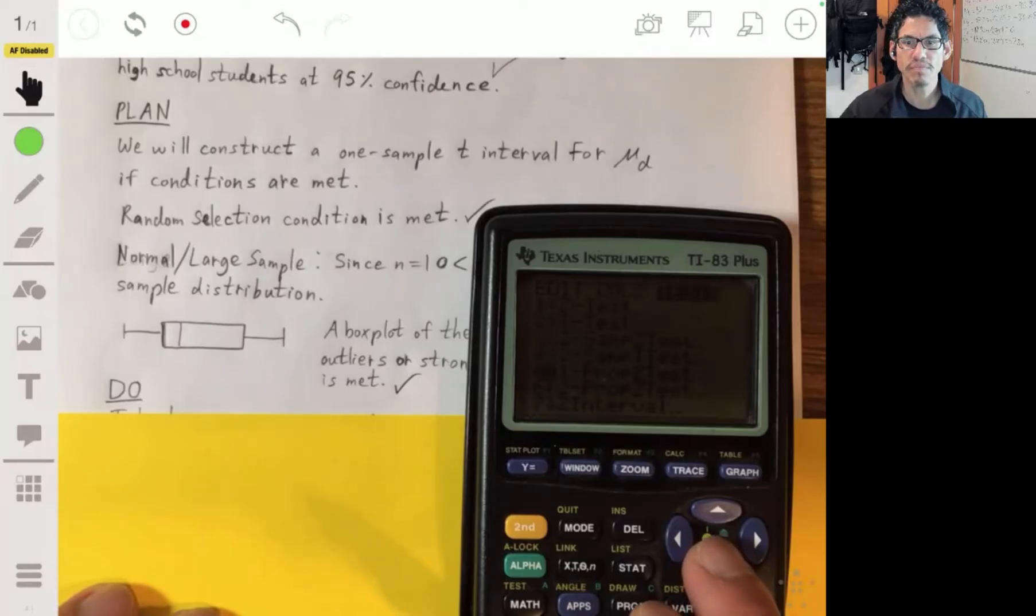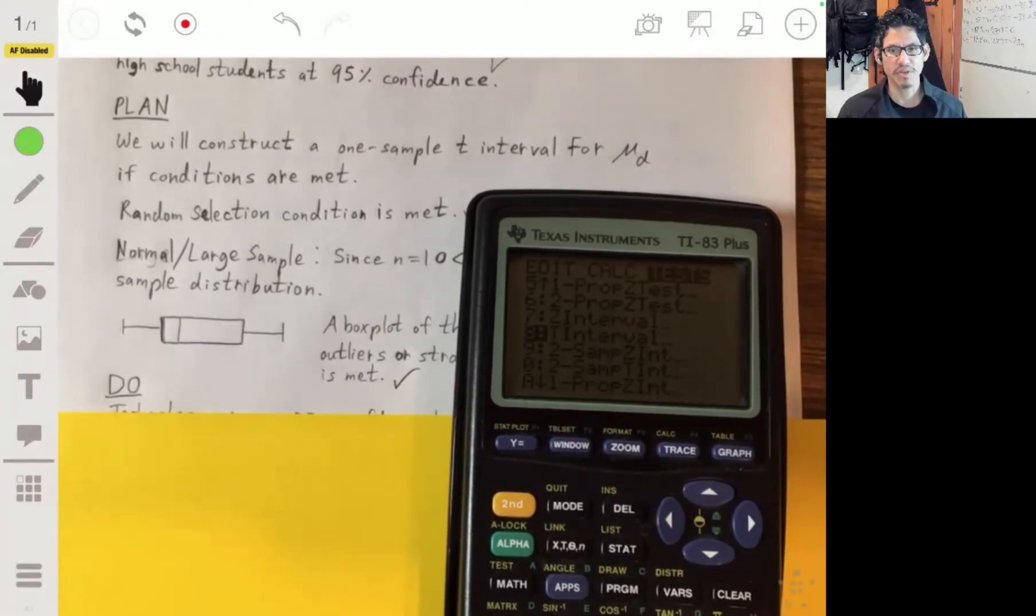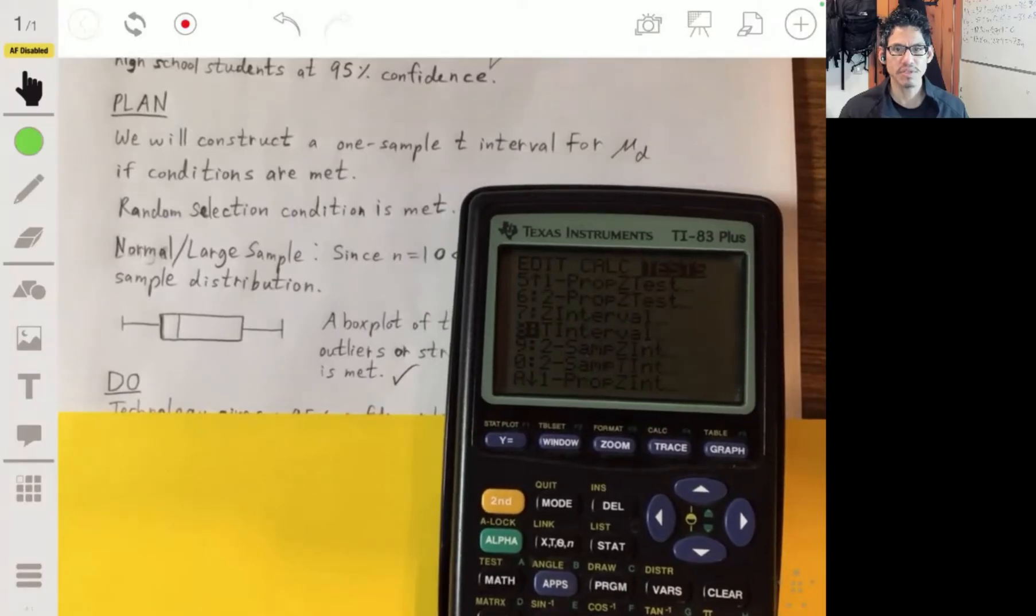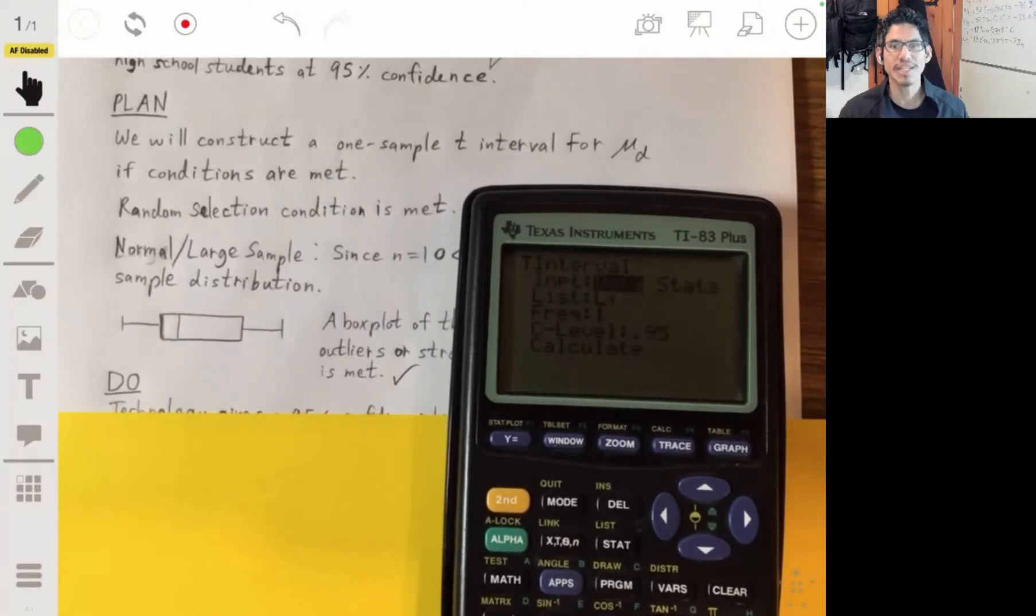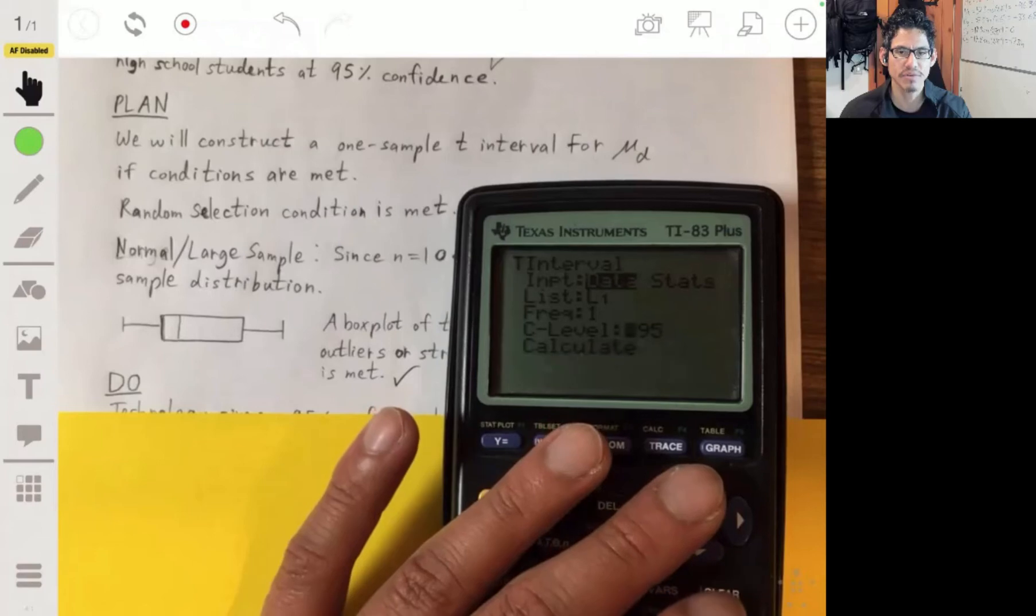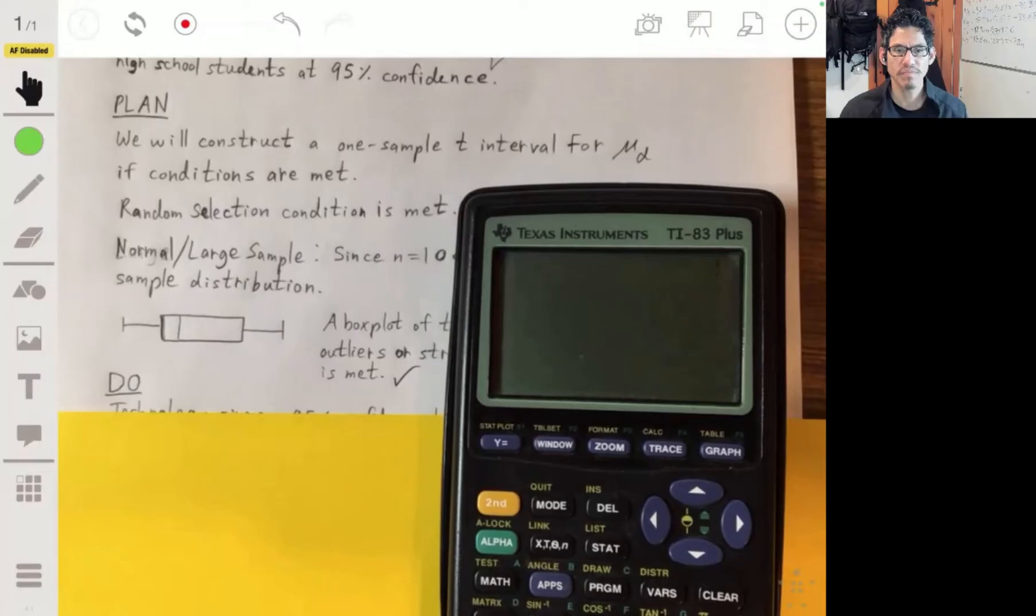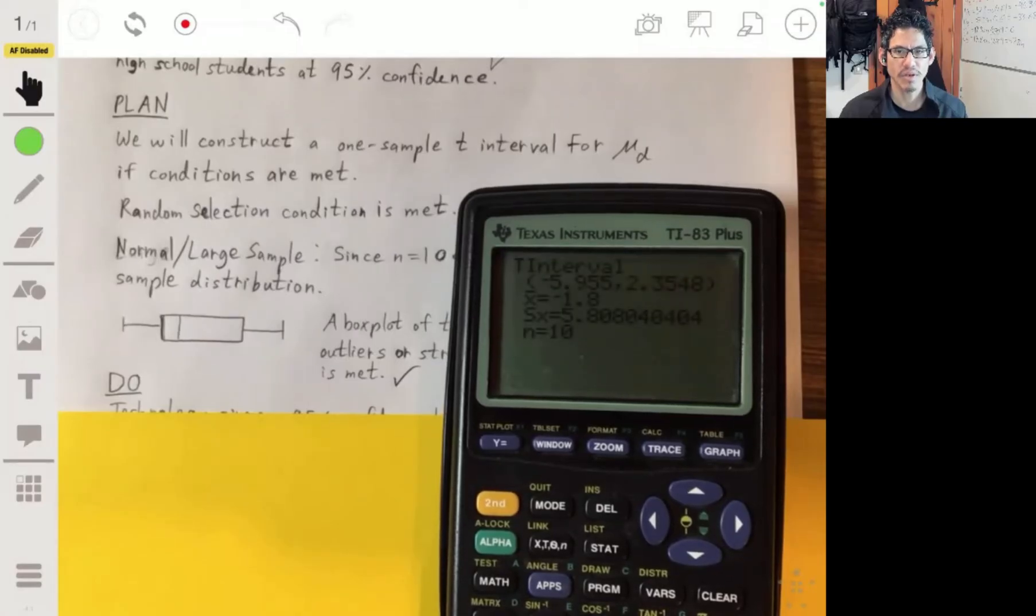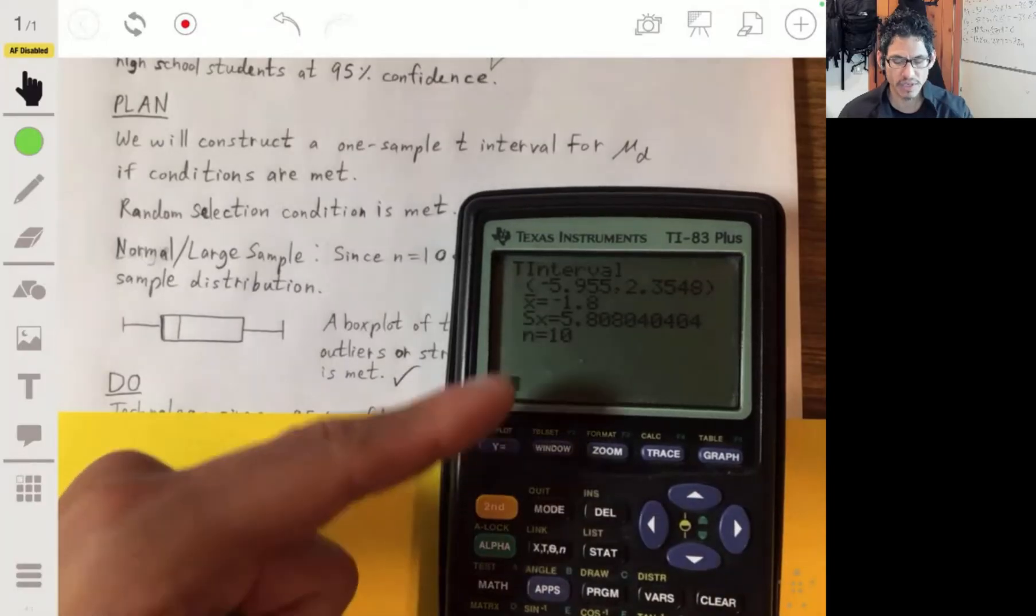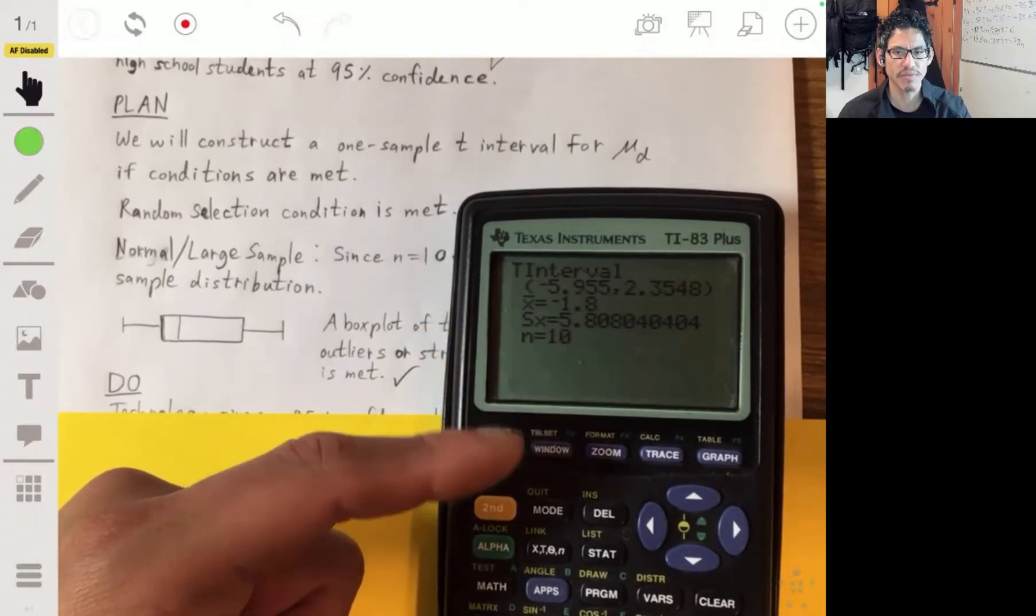Your calculator, maybe you have a newer version, so it's probably going to be more clear and colors and whatever. So I'm old school, so I'm just using this one. But I'm going to input the data - my calculator's in list one. Make sure you enter the confidence level. And you calculate it, it's going to give you... We got our confidence interval going from negative 5.955-ish to about 2.3548.